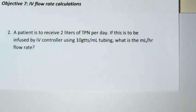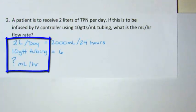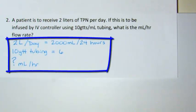In question 2, a patient is to receive 2 liters of TPN per day. If this is to be infused by IV controller using 10 drops per milliliter tubing, what is the milliliter per hour flow rate? In the toolbox, we have 2 liters per day, which is also equivalent to 2,000 milliliters per 24 hours, 10 drop tubing, which is a magic number of 6, and our question, what is the milliliter per hour flow rate?